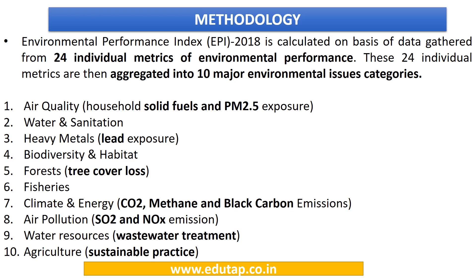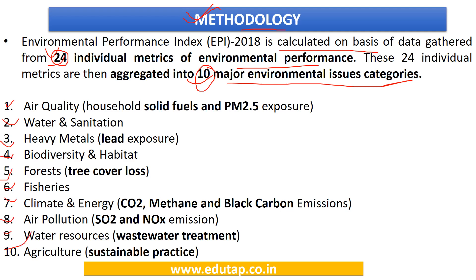How is the Environmental Performance Index calculated? EPI 2018 is calculated by aggregating data gathered from 24 individual metrics of environmental performance into 10 major issue categories. Remember the names of all these 10 categories, as well as their subsequent indicators — for example, under air quality, solid fuels and PM 2.5 are covered.